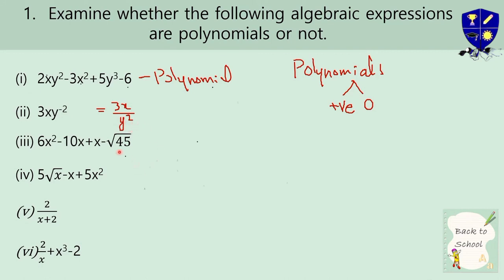Now see: 6x squared minus 10x plus x minus root of 45. You will not be confused by the root of 45, because this is a number. When the power is positive or equal to 0, it is a polynomial. Here we basically have x to the power 0. Whether it is a root or any number, there is no difference — this is a polynomial.